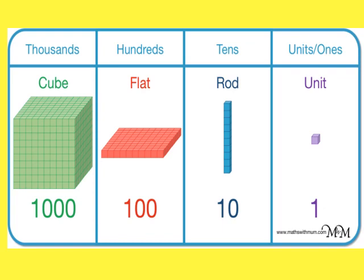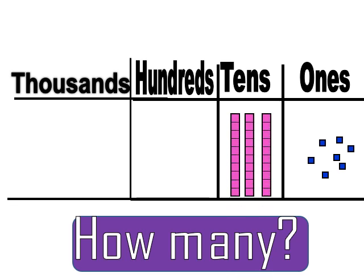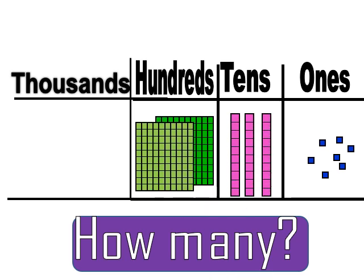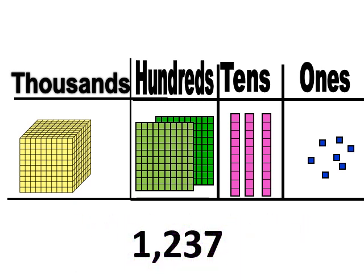This is how you will remember the place value representations: a units place is shown by a cube, a tens place is shown by a rod, a hundreds place is shown by a flat, and a thousands place is shown by a large cube or block. For example, what is this 4-digit number? There are 7 cubes of 1s, 3 rods (3 tens), 2 hundreds, and 1 thousand. The number is 1,237.